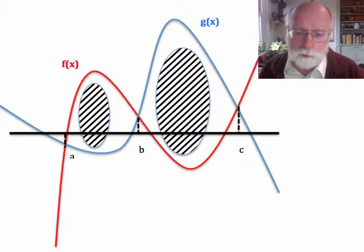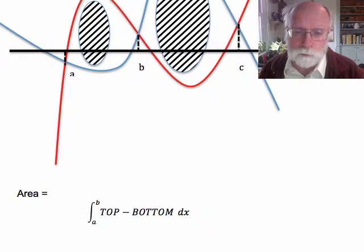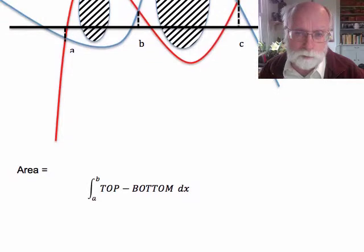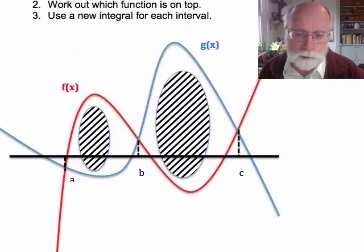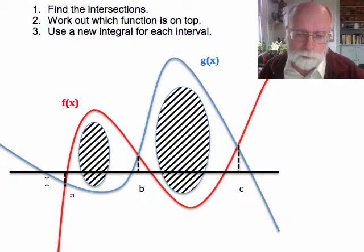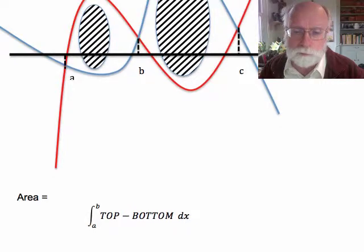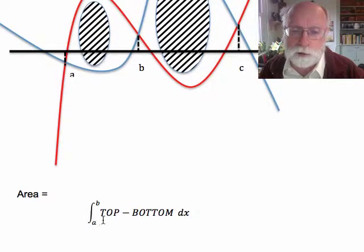Whenever we're calculating area with an integral we're using the formula that the area is the integral along the x-axis between a and b of the top function minus the bottom function. So it's important that the top function not change to the bottom function somewhere between a and b. And that means that for this particular area problem we're going to use one integral between a and b and then a different integral between b and c because we have a new top function. But the formula we always have in mind is that the area is the top minus the bottom.